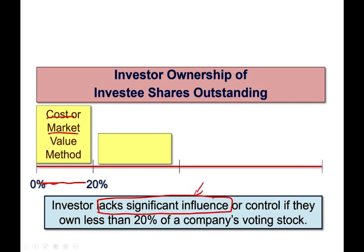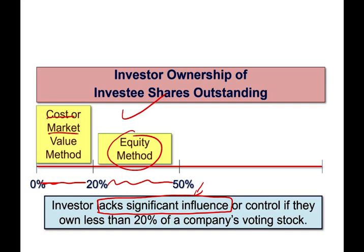This is the method we looked at in the prior session — you can click the description. If you own between 20% to 50%, you would use something called the equity method. This is what we're going to be looking at today. Here, you assume to have significant influence. What does that mean? It means you can vote the board of directors, vote yourself to be one, and maybe get a position in management. Therefore, you would use the equity method.